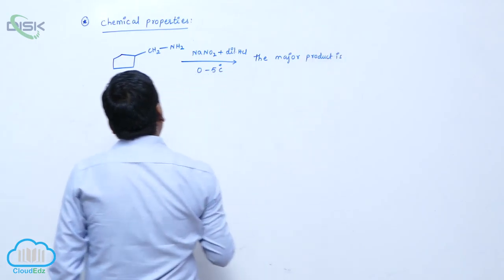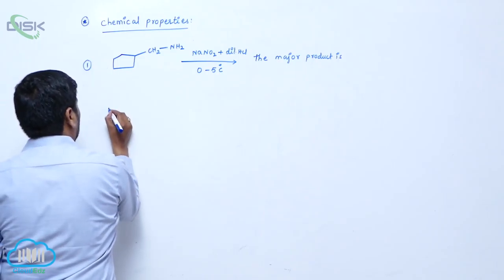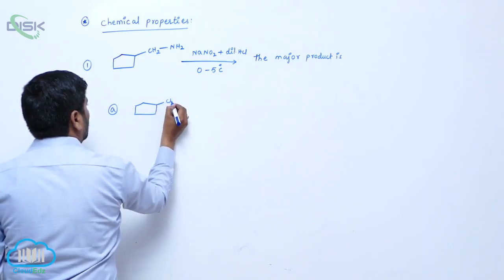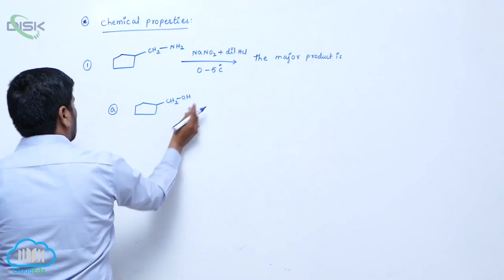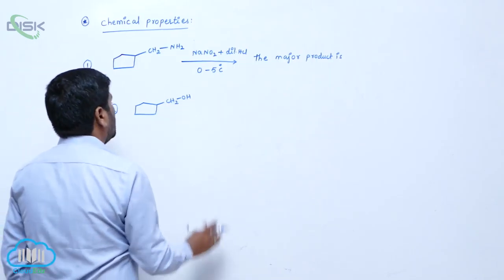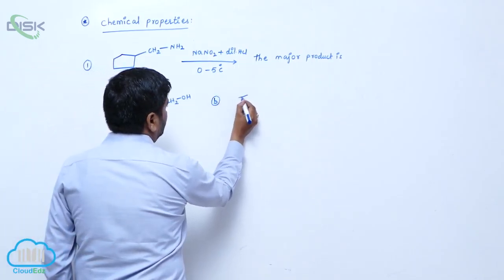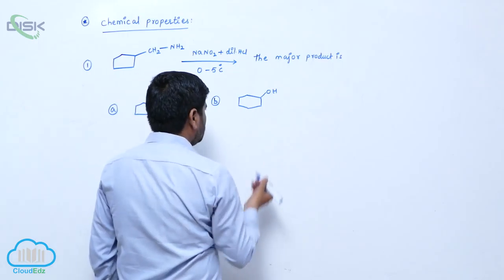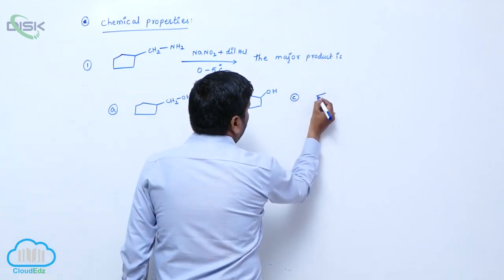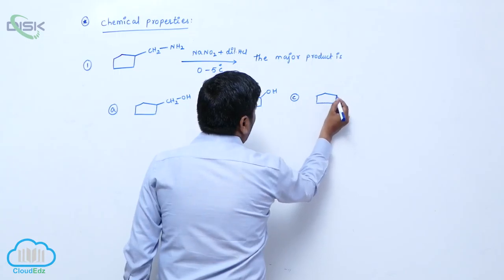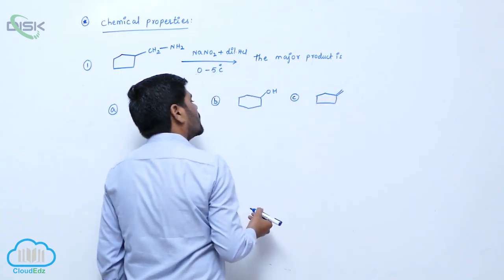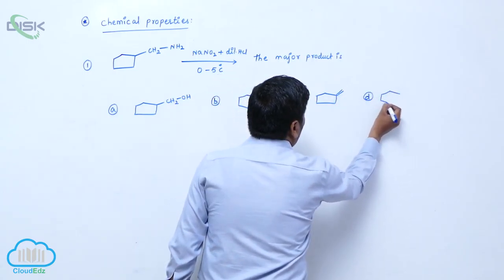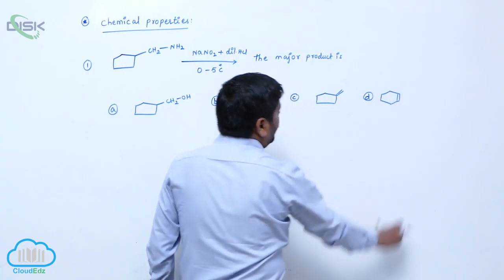First option, cyclopentylmethyl alcohol. B, cyclohexanol. C, double bond containing compound. D, cyclohexane.